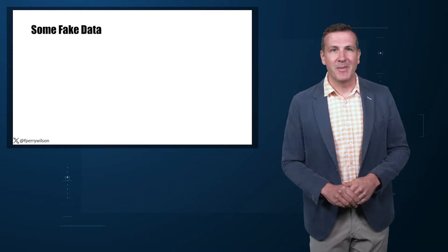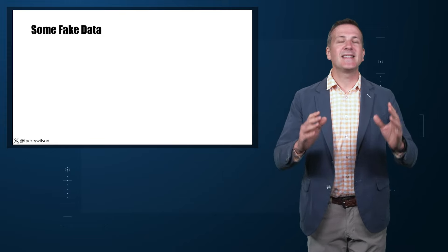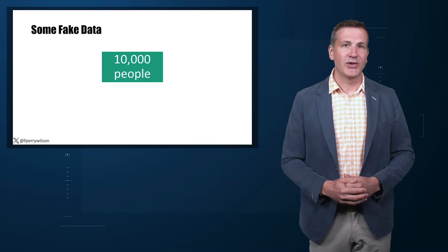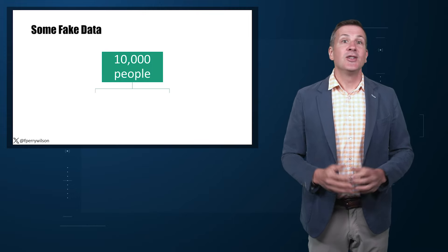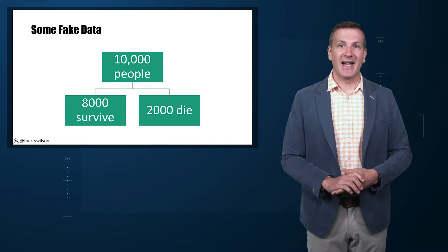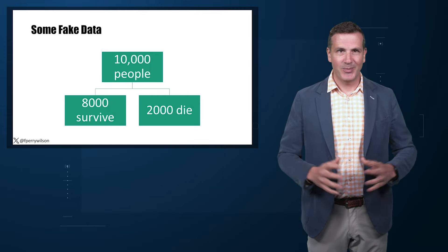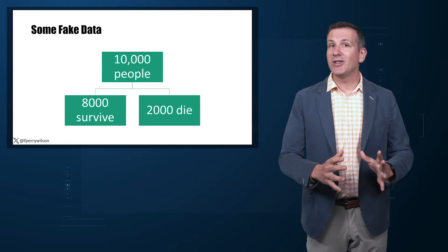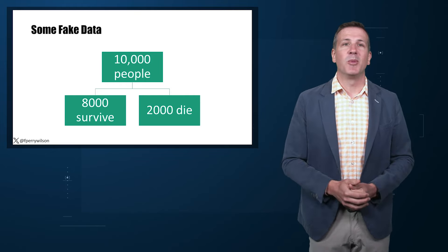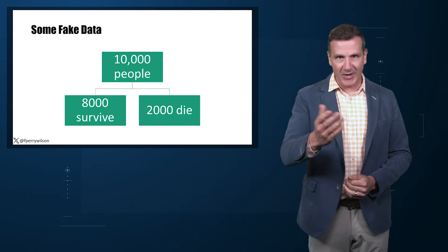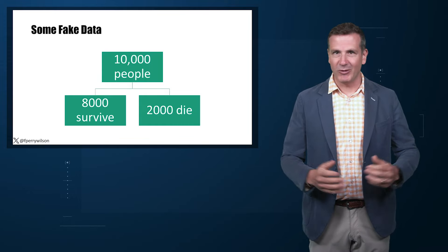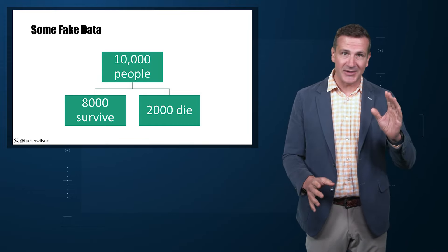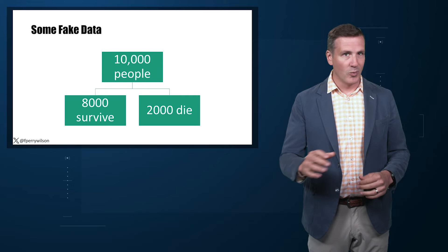A fake example to illustrate my point. Let's say we have 10,000 individuals who we follow for 10 years and 2,000 of them die — it's been a rough decade. At baseline, I had measured a novel biomarker, the PERI factor, in everyone. To keep it simple, the PERI factor has only two values: zero or one.